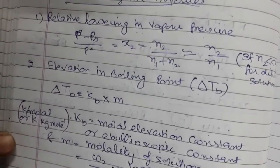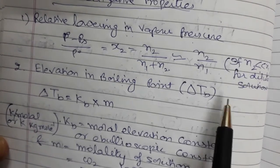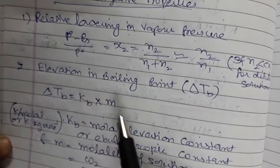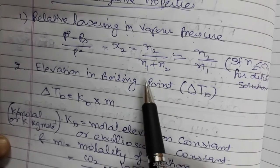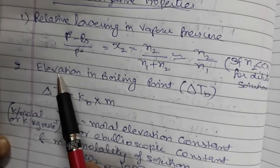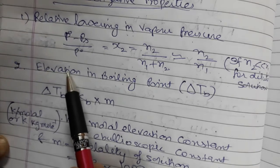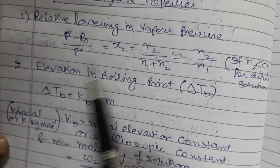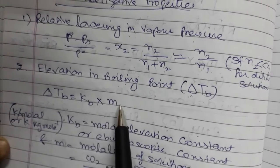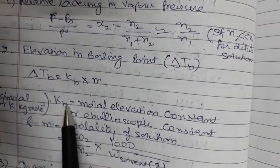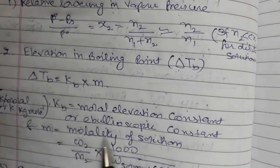The second colligative property is elevation in boiling point, denoted as delta Tb. When a non-volatile solute is dissolved, the boiling point of the solution increases. This elevation in boiling point, delta Tb, is equal to Kb into m, where Kb is the molal elevation constant, also called the ebullioscopic constant, and m is the molality of the solution.